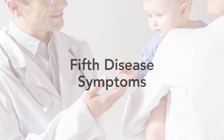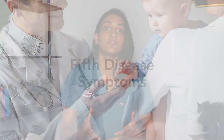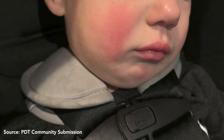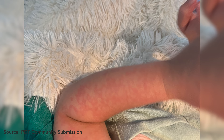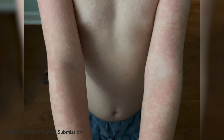The most notable symptom of fifth disease is the bright red rash on the cheeks that makes it look like the child had been slapped, hence the nickname. Other symptoms include a mild fever, runny nose, headache, fatigue, and muscle aches. After the cheek rash appears, a lacy pink rash may spread to the arms, legs, and body. This rash can fade and reappear, especially with sunlight, heat, or exercise.